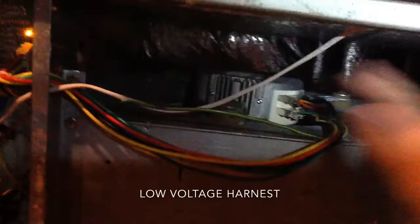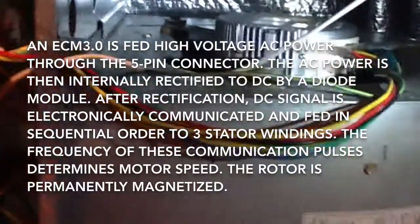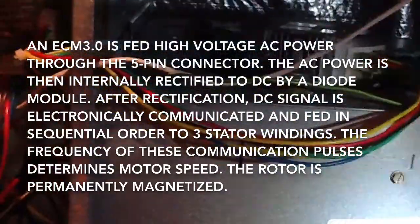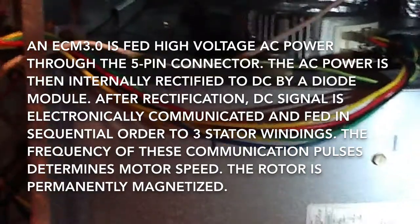The mistake I made is — normally when I troubleshoot a unit that has an EMC motor, which is what we have there, I normally take the harness out from the high voltage side and the harness on the top. I was able to get high voltage on the top harness. I was testing for low voltage. The mistake I made is that I tested in AC, which is alternating current.